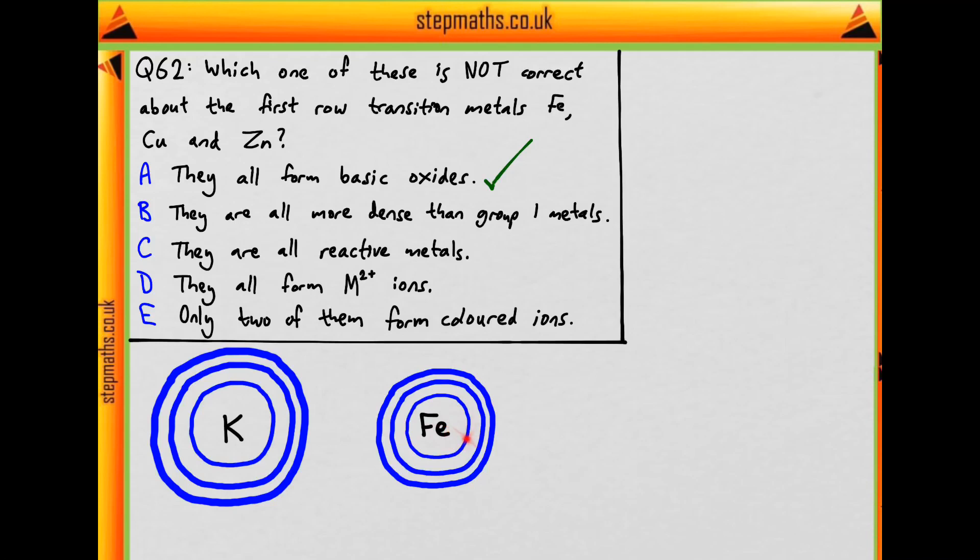So if we have smaller iron atoms than we have potassium atoms, then we can squeeze more iron atoms in a certain area in the solid. So our iron is going to be heavier and more dense than the group 1 metal potassium. So this is always true.